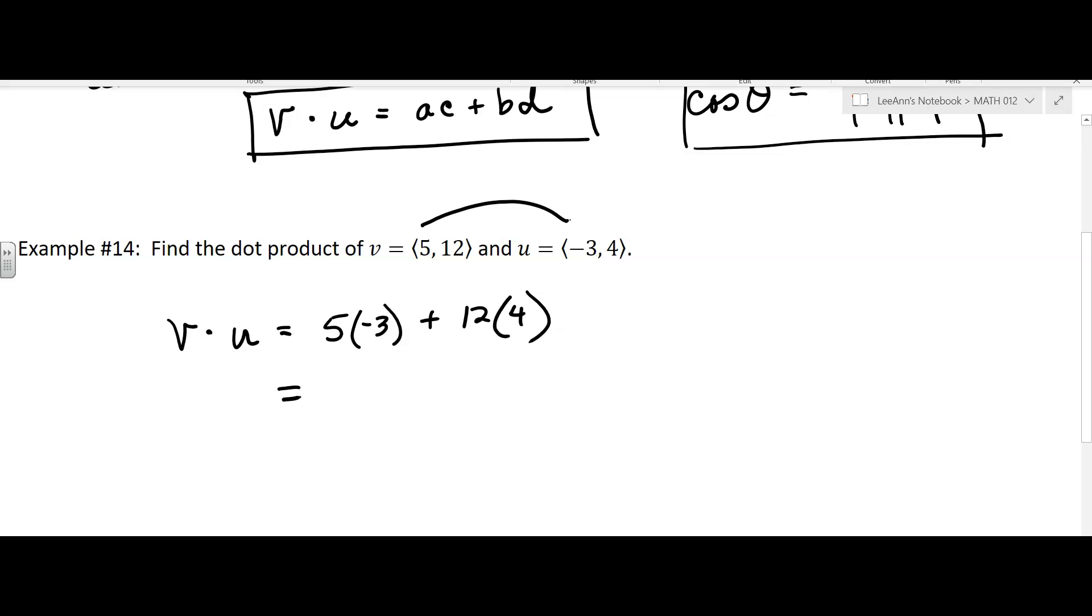You're just saying five times negative three, and then you're adding it to 12 times 4. That's kind of how visually I look at it. So you get negative 15 plus 48, which is 33. Notice it's not a vector.